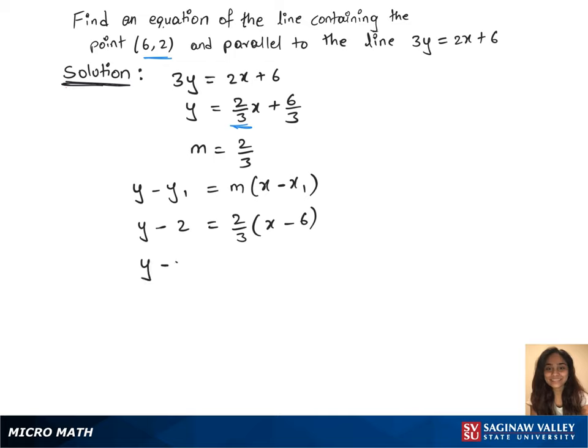Let's simplify this. y minus 2 equals 2 over 3 times x minus 4.